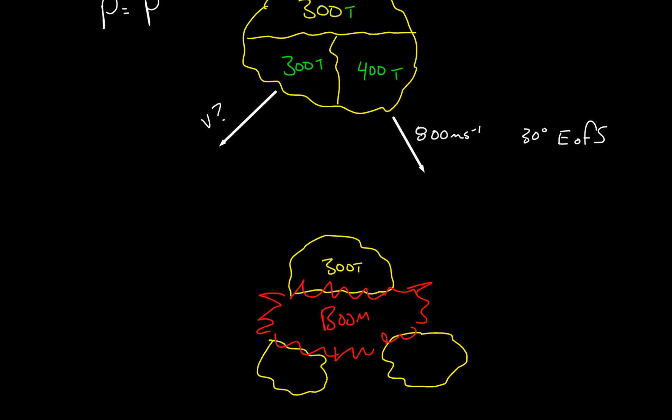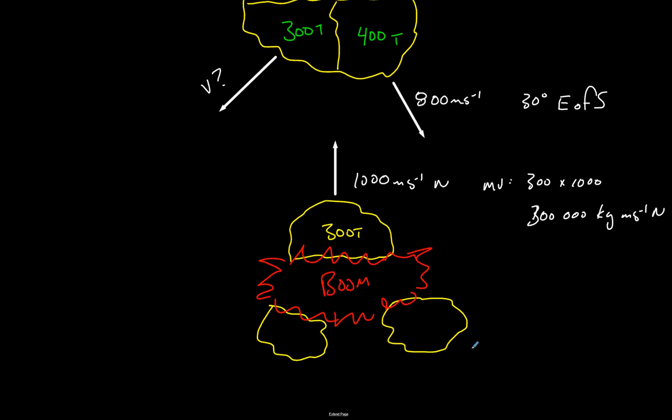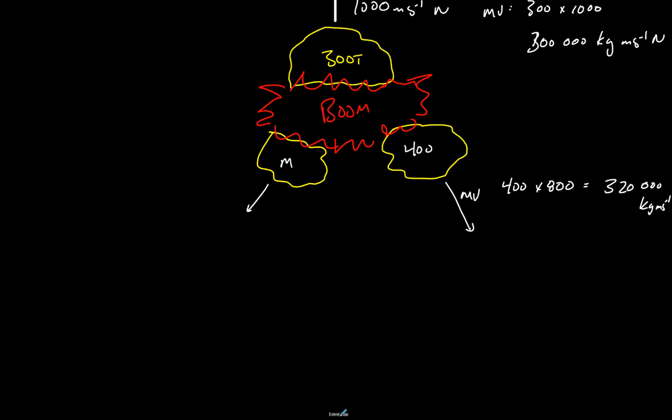So 300 tons and 1,000 meters per second north. We've got mass times velocity. So 300 times 1,000 gives you 300,000 kilogram meters per second north. And we've got to find the momentum here. So we've got 400 times 800, so we've got 320,000 kilogram meters per second there. And we know the mass here, but nothing else.